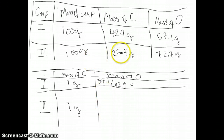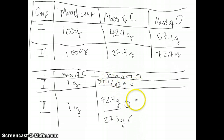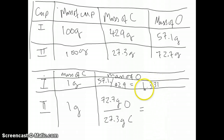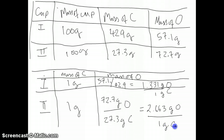You can do the same for compound 2. When there are 27.3 grams of carbon, there are 72.7 grams of oxygen. But if there's only 1 gram of carbon, the mass of oxygen is just 72.7 grams divided by 27.3 grams of carbon — oxygen on top, carbon on the bottom. Calculating this out, compound 1 gives 1.331 grams of oxygen per gram of carbon, and compound 2 gives 2.663 grams of oxygen per gram of carbon.